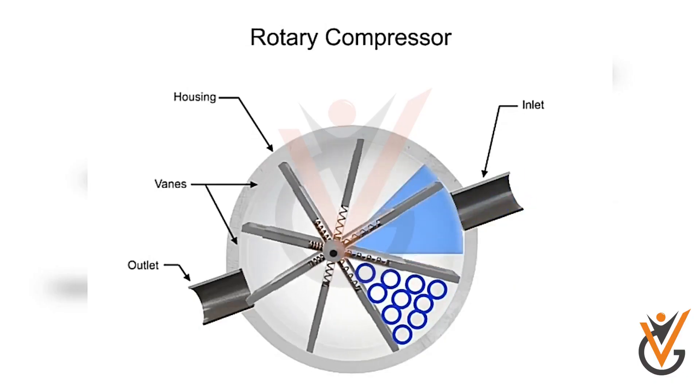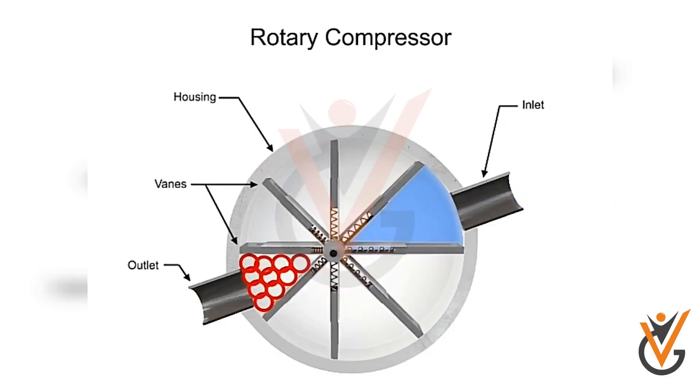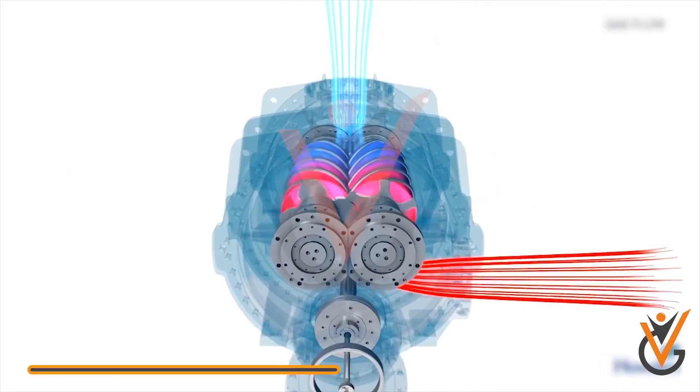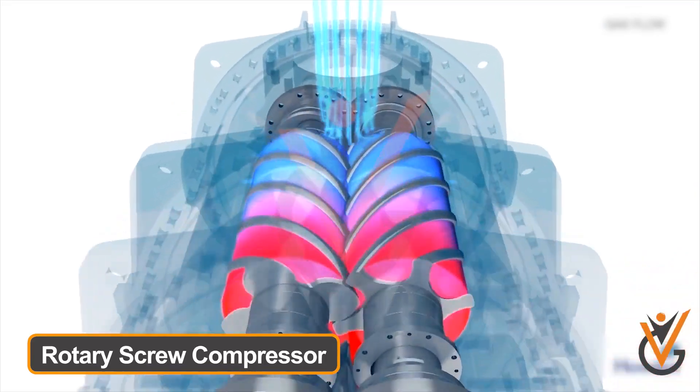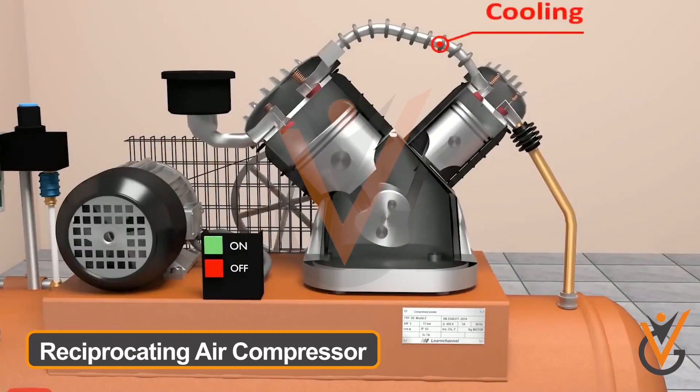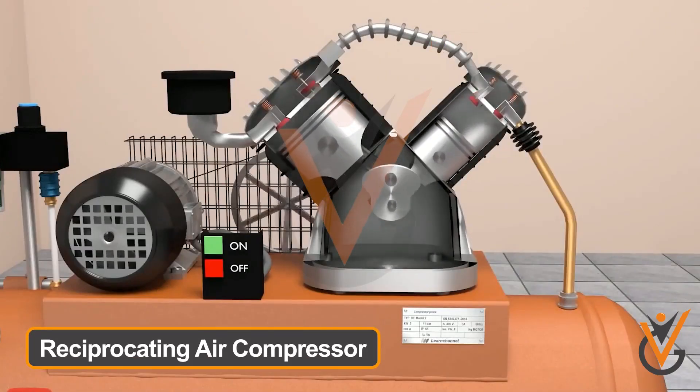Types of Air Compressor: centrifugal compressor, rotary vane compressor, rotary screw compressor, and reciprocating air compressor.